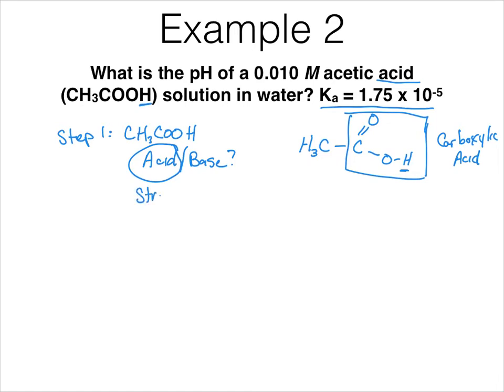Now we have to know if this is strong or weak. Well, two ways of figuring this out. One is that it is not one of our six strongs. The other is that it has a Ka.